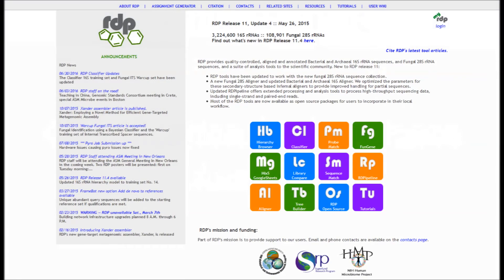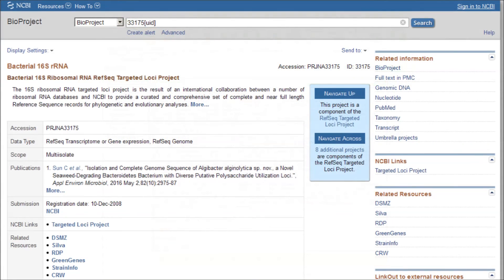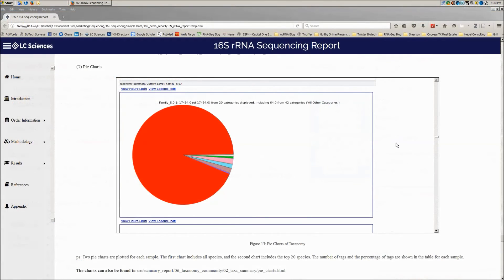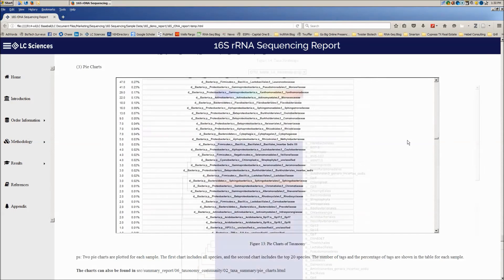The taxonomic analysis is performed by mapping OTU representative tags to the RDP, green genes, and NCBI 16S microbial databases. Taxonomy results are displayed in the form of area charts, heat maps, and phylogenetic trees.